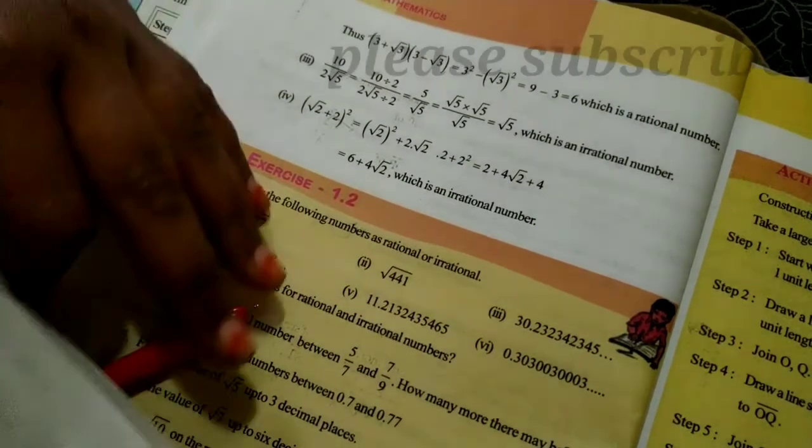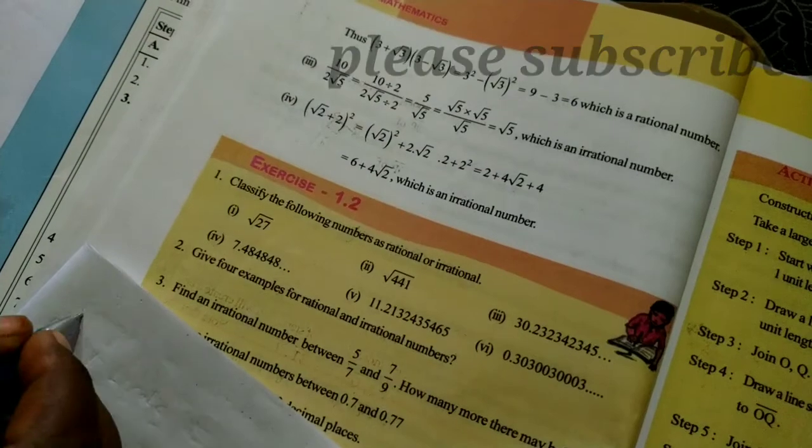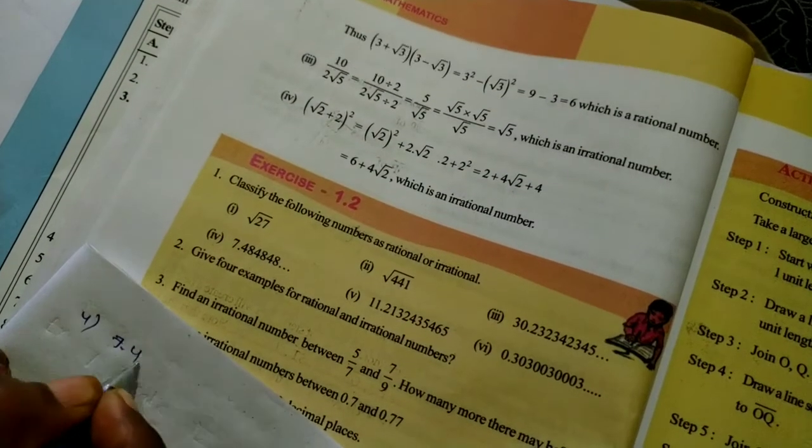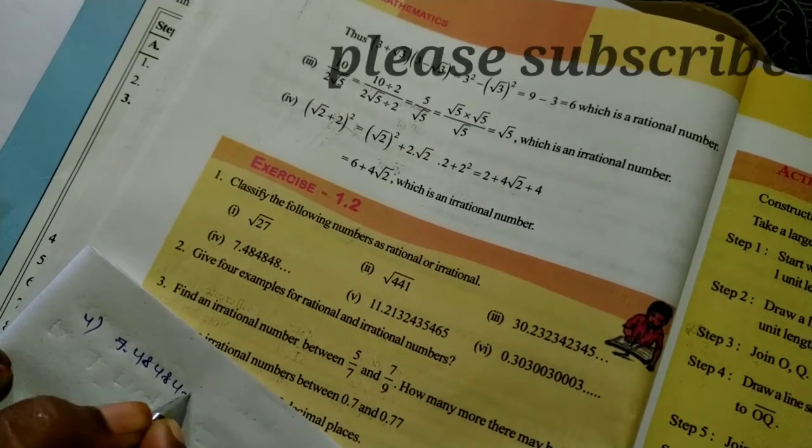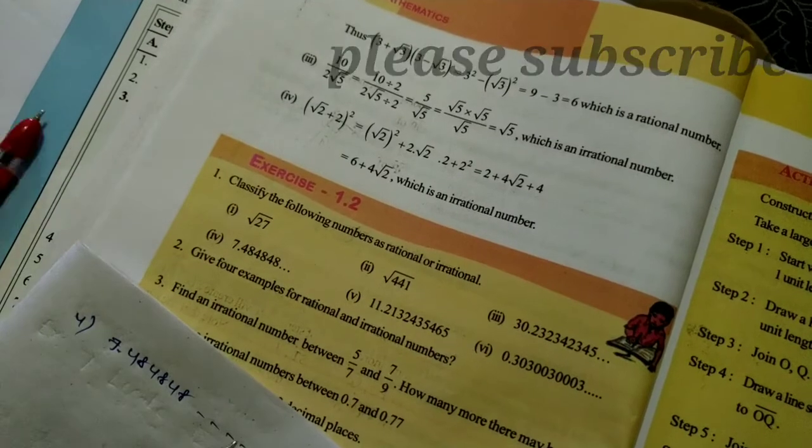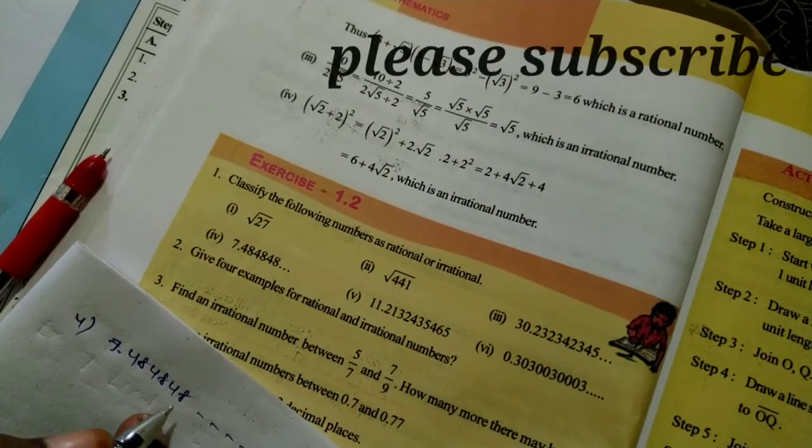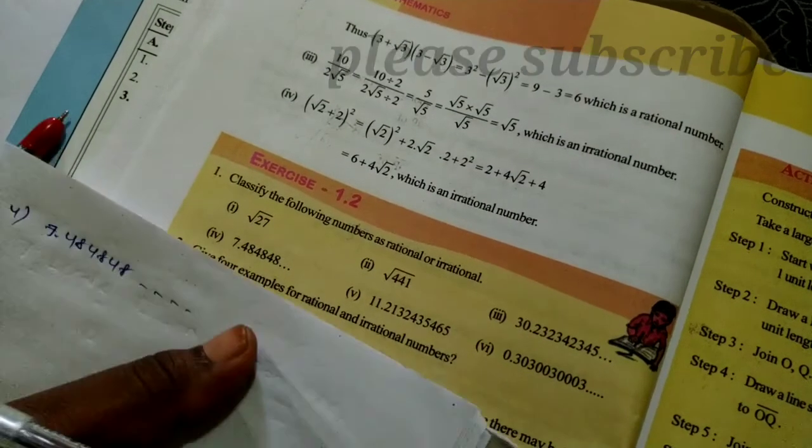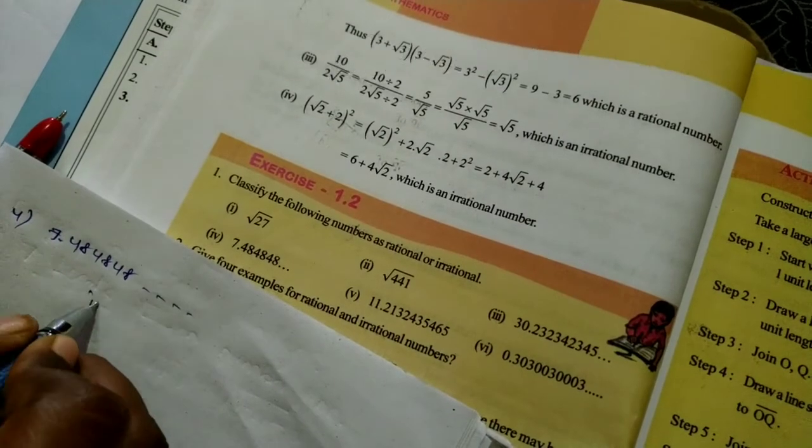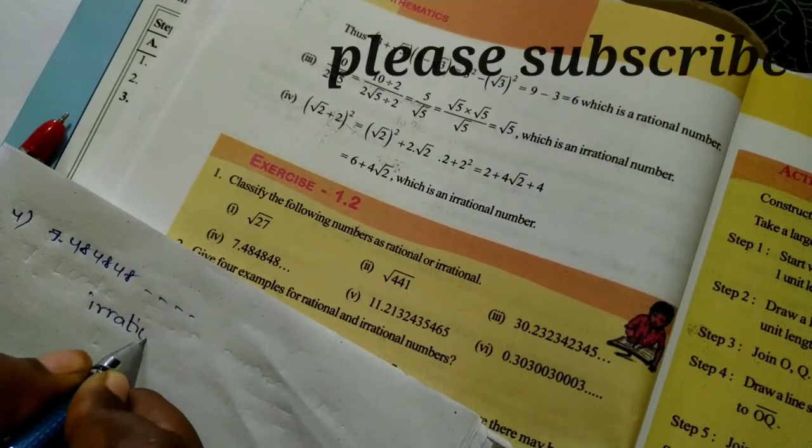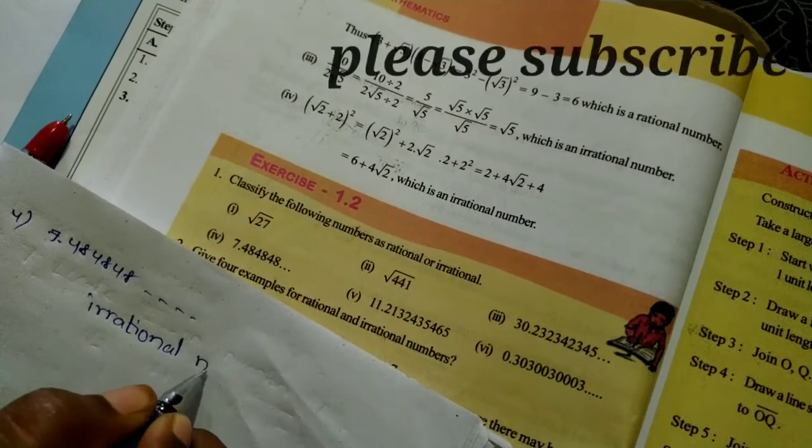Next, here is 7.48, 7.48, 48, 48, continuing to be 48, 48, 48. So this is irrational number.